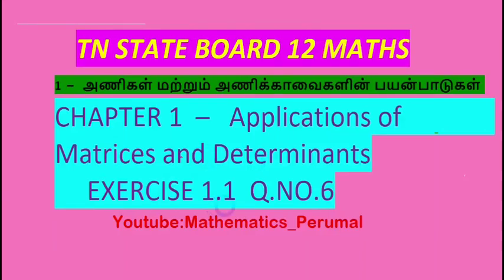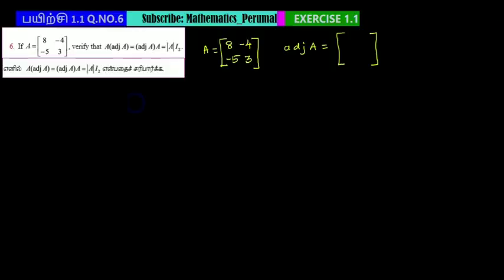Chapter 1.1, Question 6. For a 2×2 matrix, verify that A times adjoint of A equals adjoint of A times A equals the determinant of A times I₂. We will solve this for a 2×2 matrix.